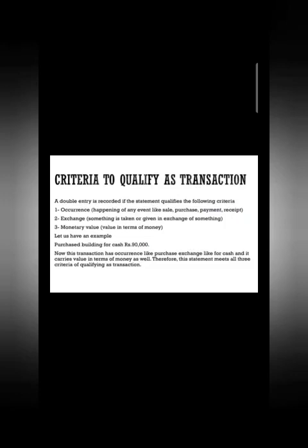Let's look at an example: 'Purchased building for cash.' This transaction qualifies all three conditions — some event is happening (purchase), there is exchange of cash against the building, and the building carries a monetary value of rupees 90,000. So this statement has all three conditions and it is a transaction; you can pass the journal entry from it.